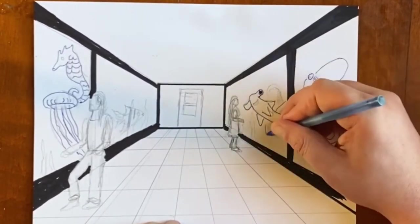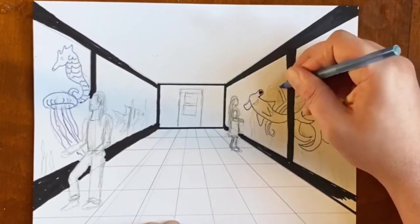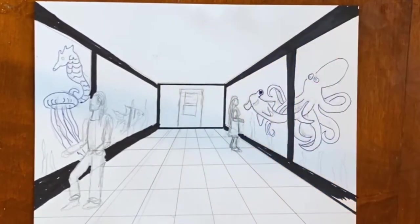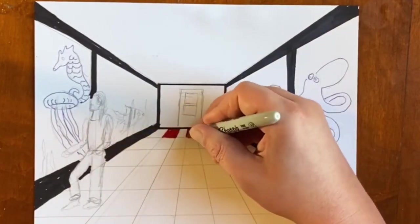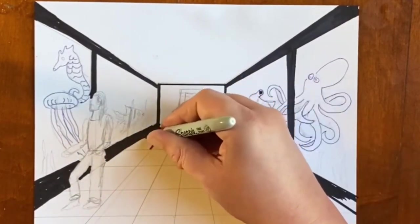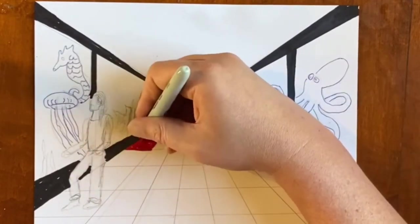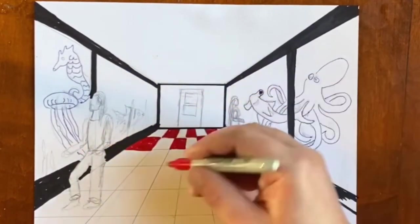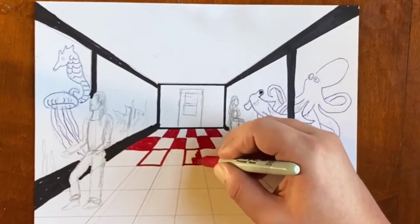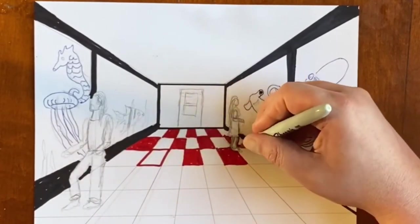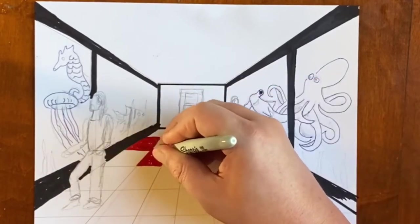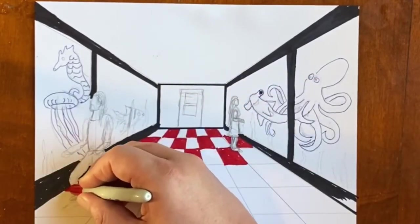Crayons will work for this. Oil pastels, all of that stuff. Sometimes it's fun to use a variety of different stuff. I'm going to start drawing over the checkerboard floor. I'm using Sharpie again, taking my time filling in all of the spots. Just keep going. Don't worry if everything looks exactly like you want it to look. That's okay if it doesn't.